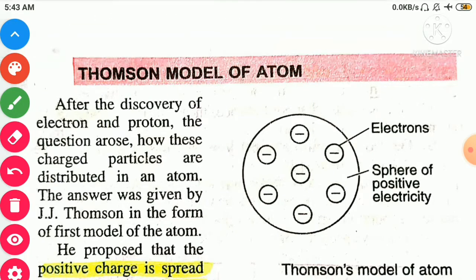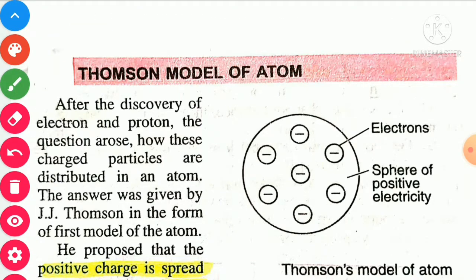First, Thomson's atomic model. After the discovery of electron and proton, scientists assumed that only two kinds of particles — electron and proton — are present in an atom. A question arose about the position, that is the distribution, of electrons and protons in an atom. The answer was given by J.J. Thomson in the form of the first model of the atom.